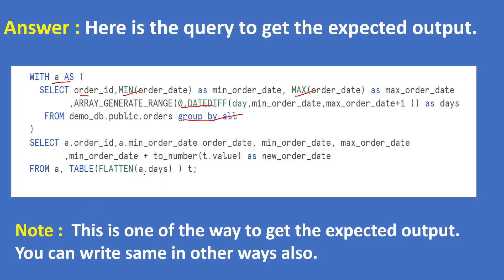For each order_id, the number of days will be flattened into rows. This is the query to get the expected output. Please note this is one of the ways to get the expected output — you can write the same in other ways as well.